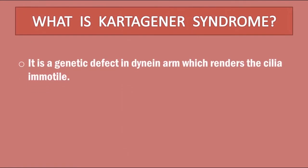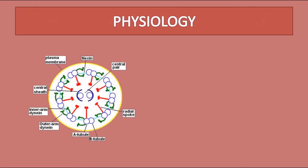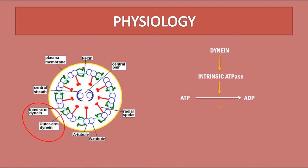It is a genetic defect in the dynein arm which renders the cilia immotile. It is inherited as an autosomal recessive disease. Now let's see the normal physiology. The cross section of cilia is shown. It is made up of two central microtubules and nine duplets of peripheral microtubules. The peripheral microtubules are connected by a protein called nexin. Each set of microtubules has one inner and one outer dynein arm. Dynein contains ATPase which provides energy for motility of cilia. Cilia in turn help in mucociliary clearance. Dynein also helps in the internal rotation of organs during embryonic life.